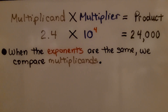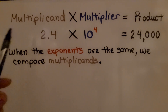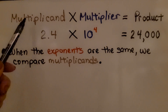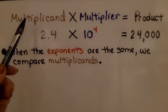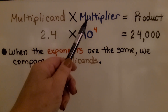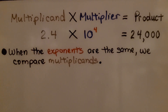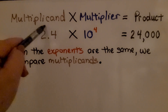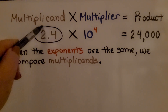As we learned in the previous lesson, 2.2d, the first number in the multiplication equation is the multiplicand. It's multiplied by the multiplier, and they equal the product. When the exponents are the same, we compare the multiplicands.